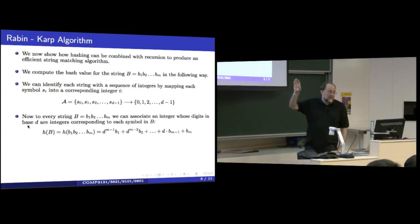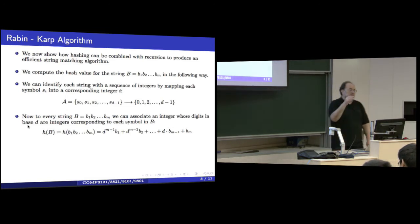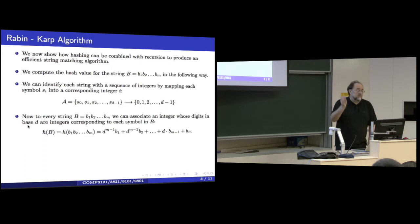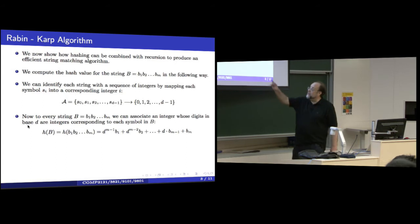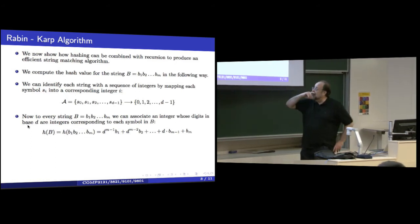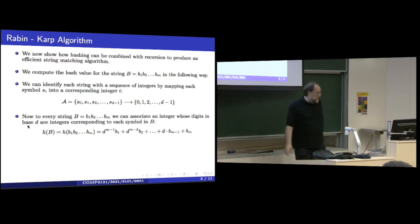So if the string is b1, b2 up to bm, and each bi is smaller or equal to d minus 1, you can think of this as a representation of a number in base d. For example, the sequence 1, 2, 3 has the natural representation 123 in base 10. This generalizes to any base.